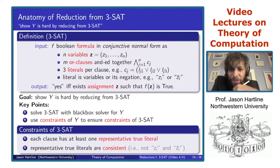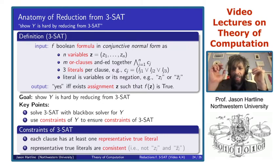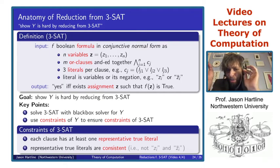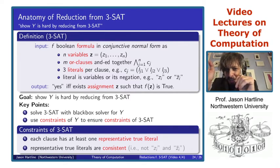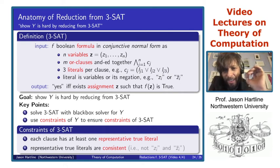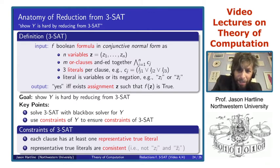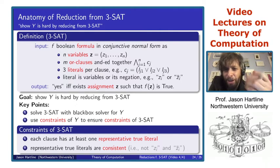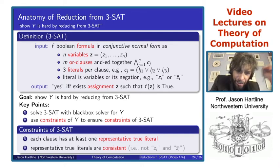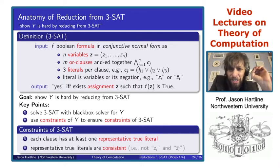We want to show that some new problem Y is hard by reducing from 3SAT to Y. We're saying that if there's some computer that solves Y, then we can use it to solve 3SAT. Now we believe that 3SAT is hard, so we don't believe this computer exists — it's a proof by contradiction. We need to use the constraints of problem Y to ensure the constraints of 3SAT.